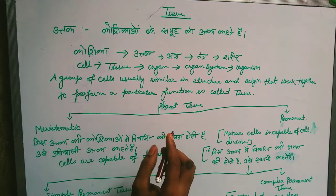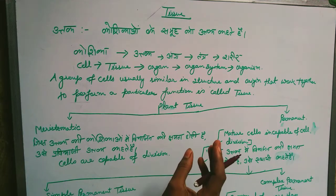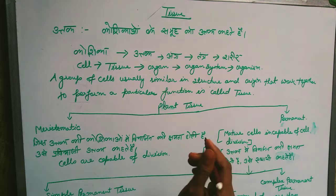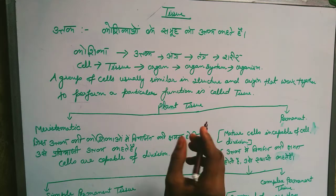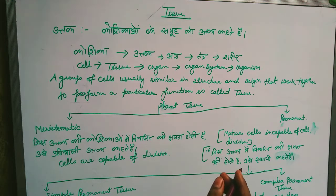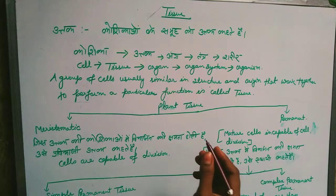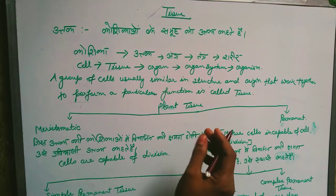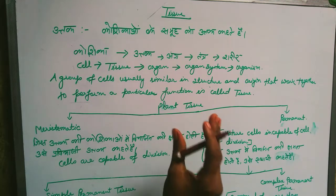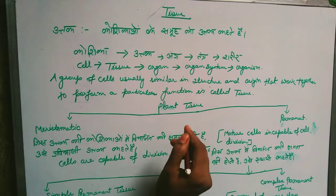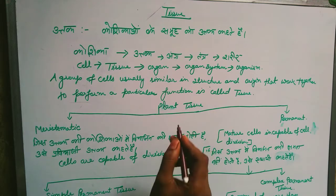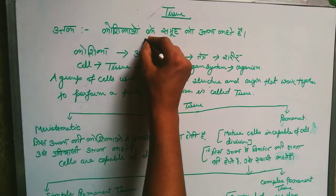Our body is made up of cells. We all know that our whole body is made by cells. There are many millions of cells in the human body. When cells come together and perform a similar function, that group is known as a tissue.